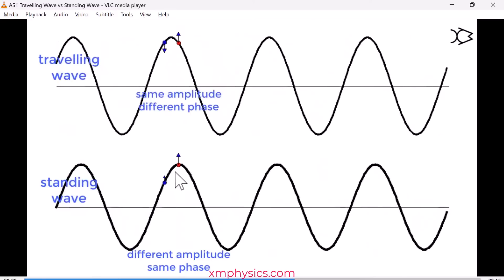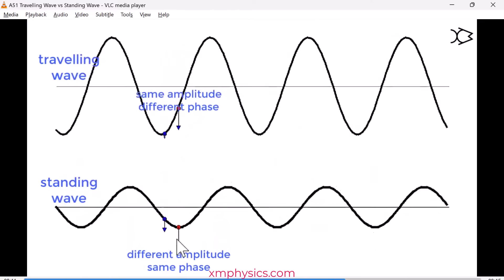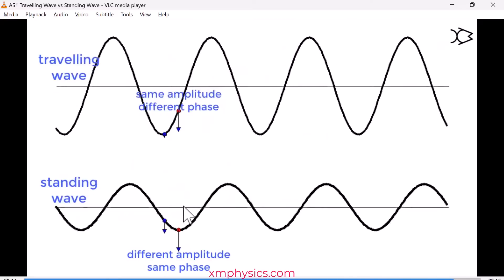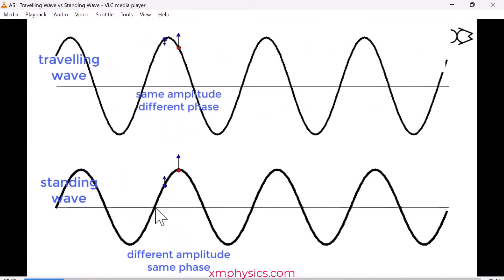But then there are also positions called the anti-nodes, where the oscillations have the maximum amplitude. You can see, this one swings by a lot. So in a standing wave, the amplitude is not constant, it's not uniform. It varies from zero at the node to maximum at the anti-node, and then back to zero at the node.